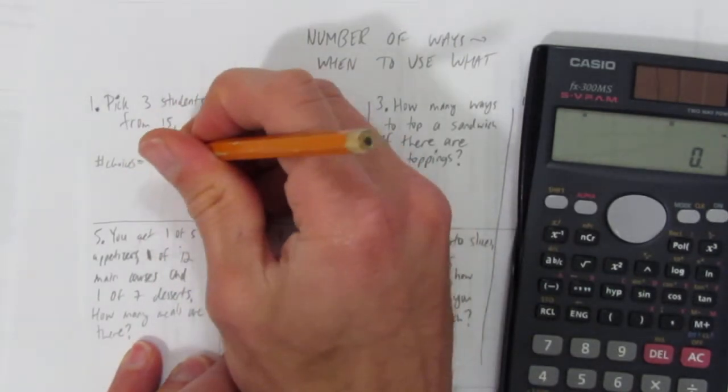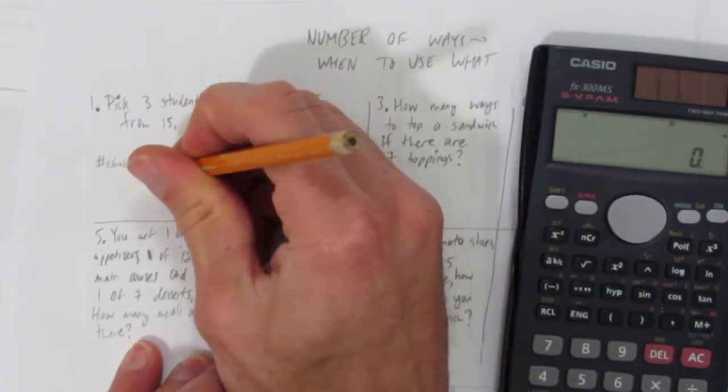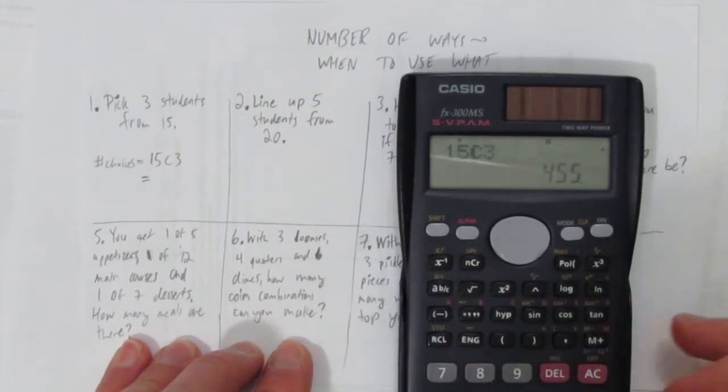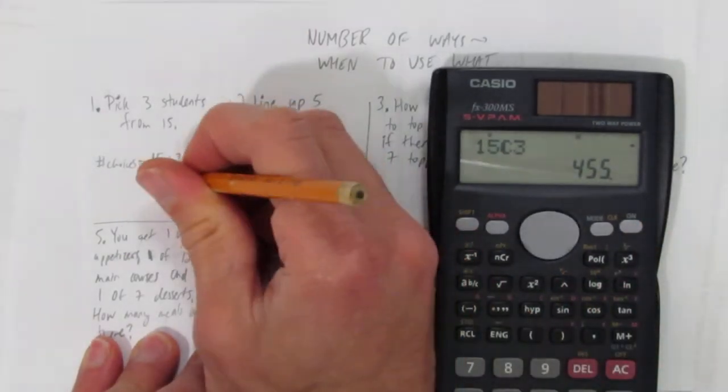I'm going to set up 15 choose 3, and simply say on my calculator, that's the answer. It tells me 455.